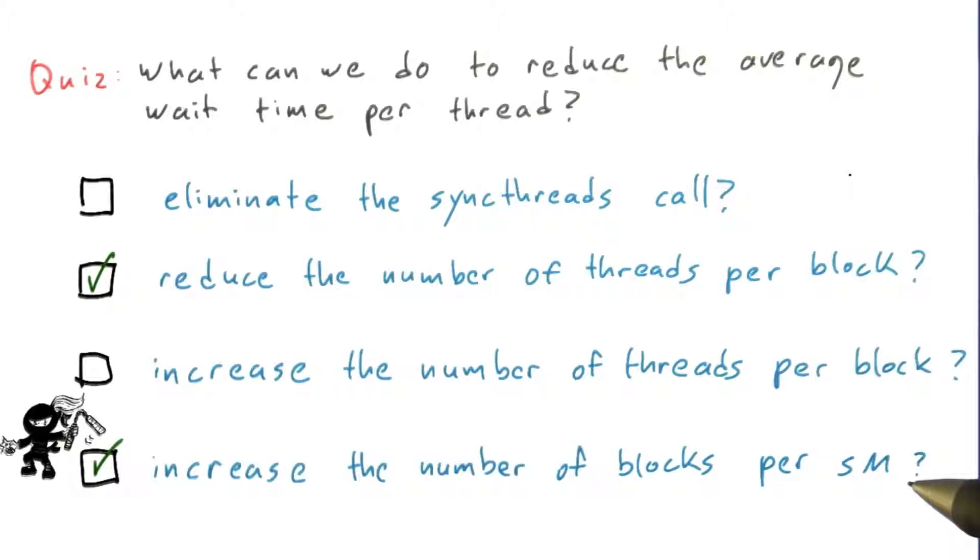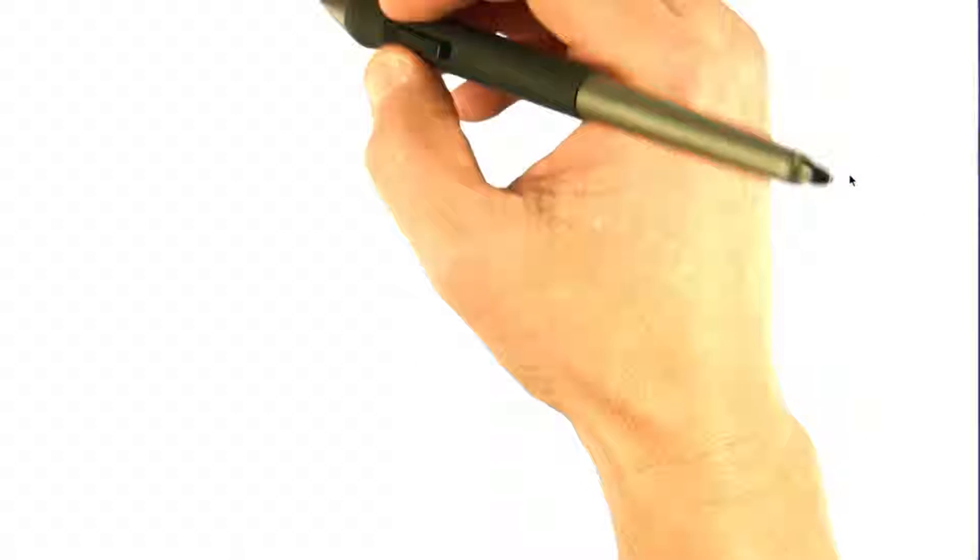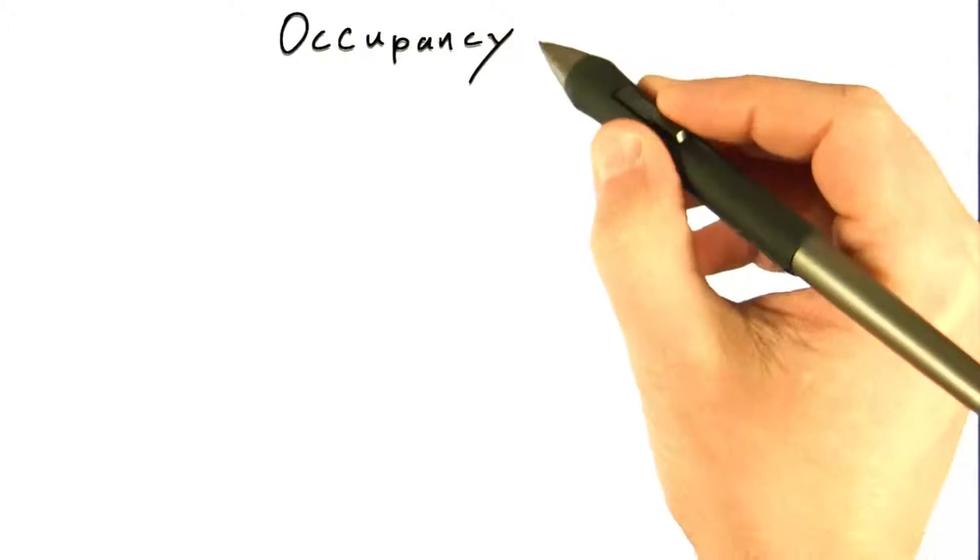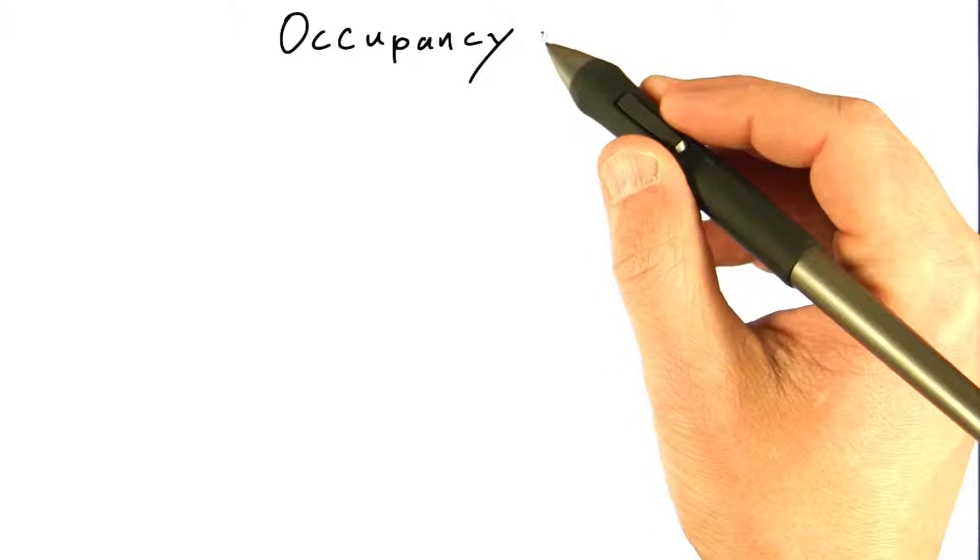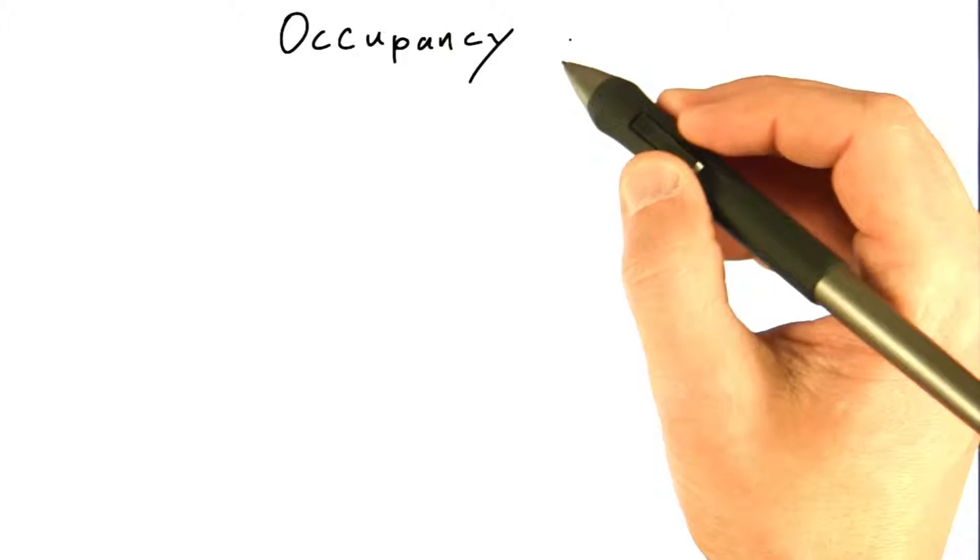So what limits the number of thread blocks that an SM can run? Let me digress a bit to answer this question, which leads into the related topic of occupancy. You'll hear this term a lot if you pay attention to the CUDA forums or if you watch presentations on optimizing CUDA code.